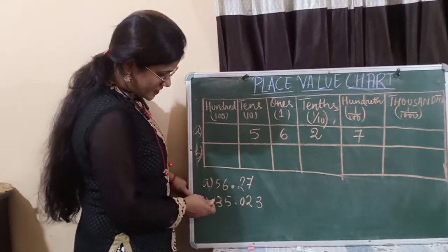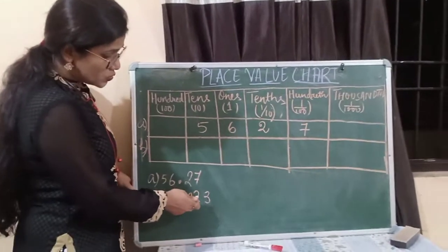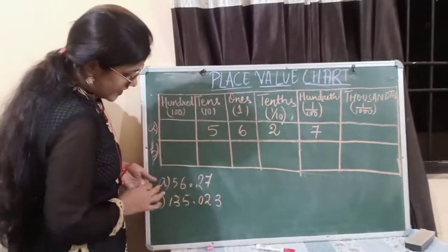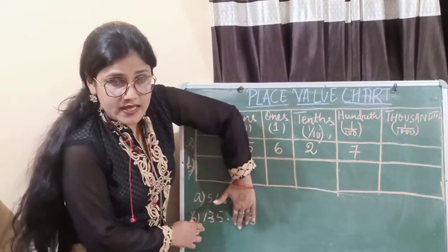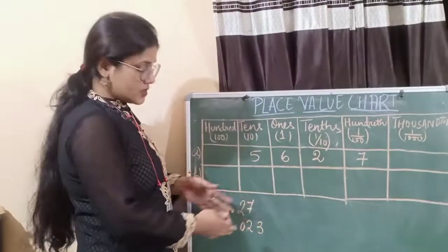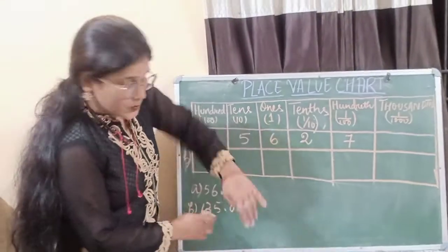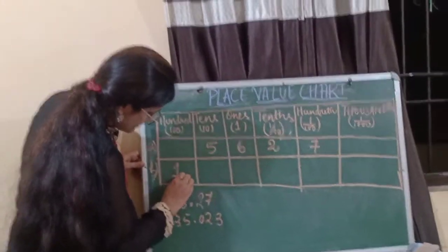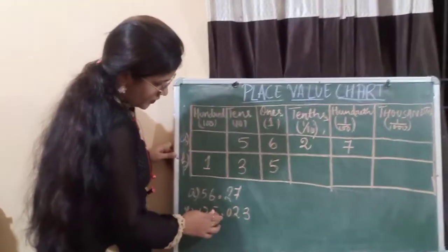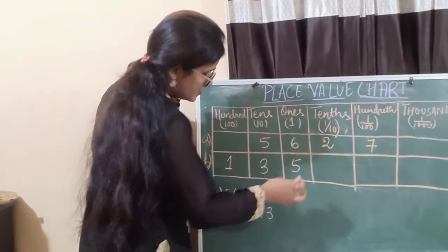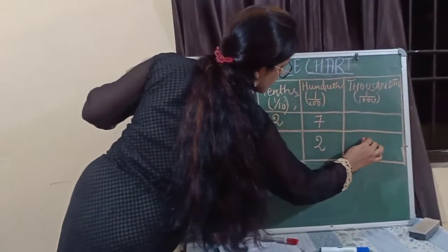Next number. Let's see another example. The next example is 135.023. Here, 135 is the whole number part and 023 is the decimal part. So we will write 1 in the 100s place, 3 in the 10s place, and 5 in the 1s place. After the decimal point, the numbers are 0, 2, and 3 — that means 0 in the 10ths, 2 in the 100ths, and 3 in the 1000ths.